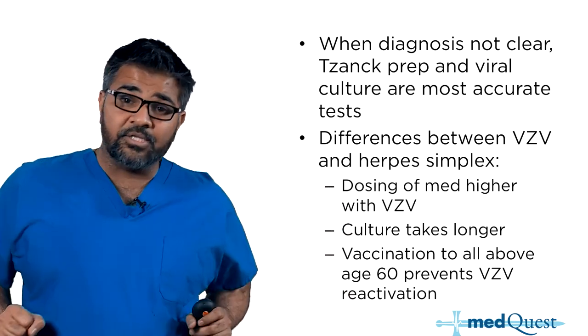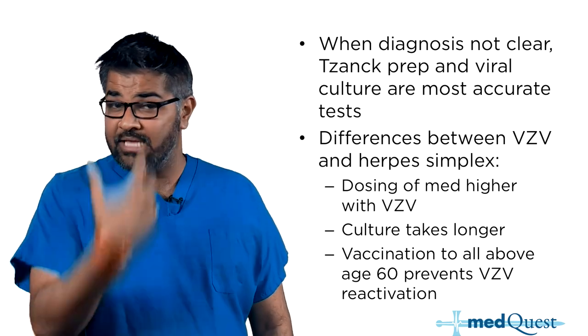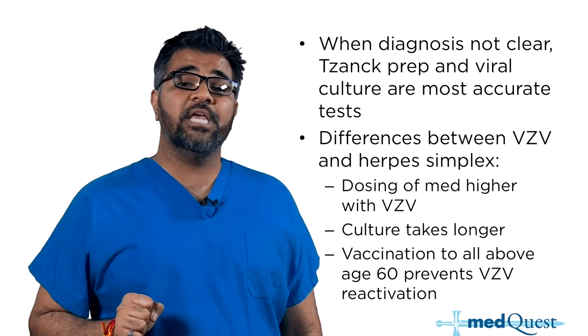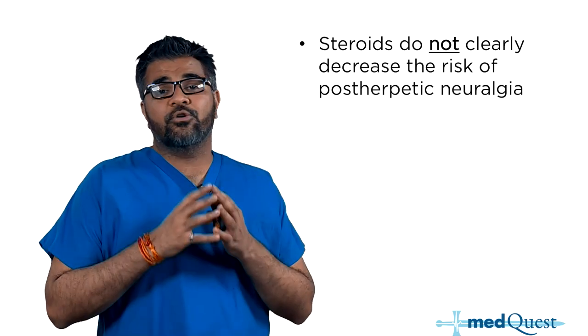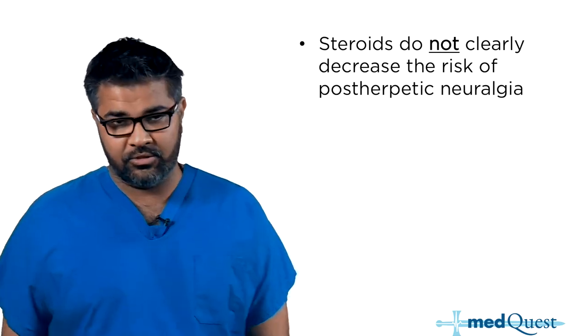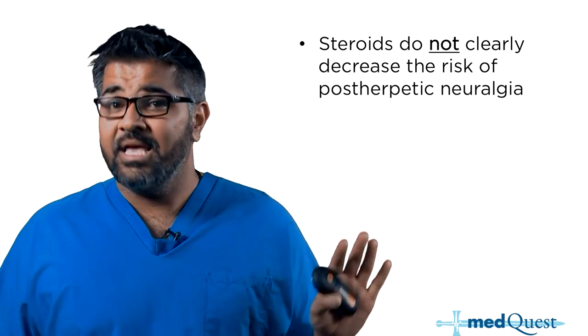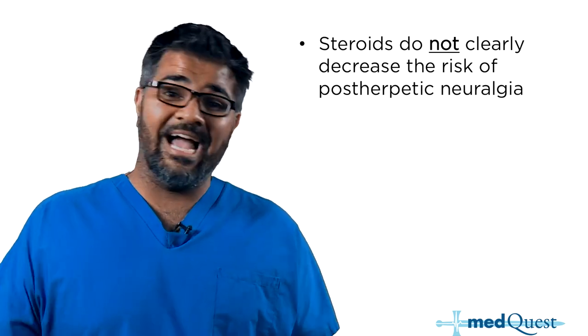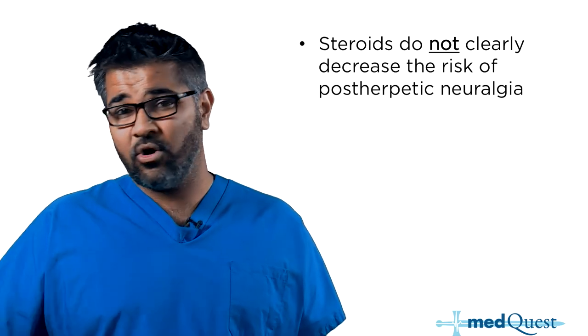To summarize: herpes and zoster use the same medications and the same diagnostic approach — just a different presentation. The only difference is you give the zoster vaccine to everyone over 60. Importantly, steroids do NOT decrease the risk of post-herpetic neuralgia. This is a very common misconception — steroids don't help, and giving steroids after a zoster outbreak may only cause more zoster.